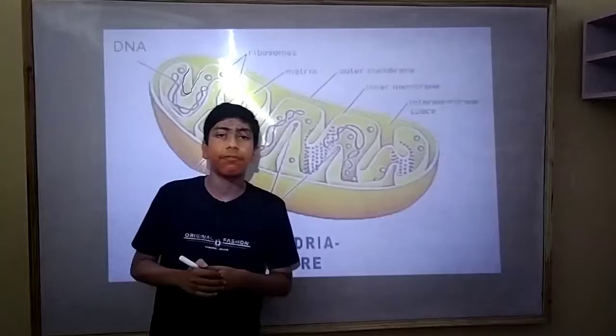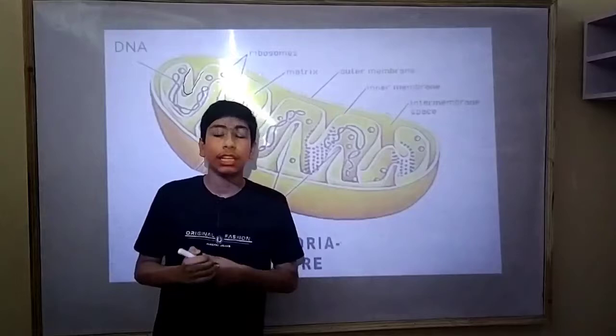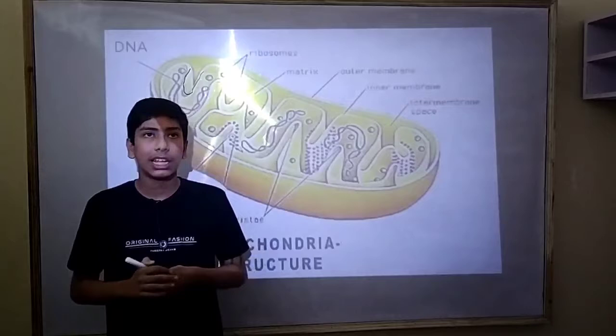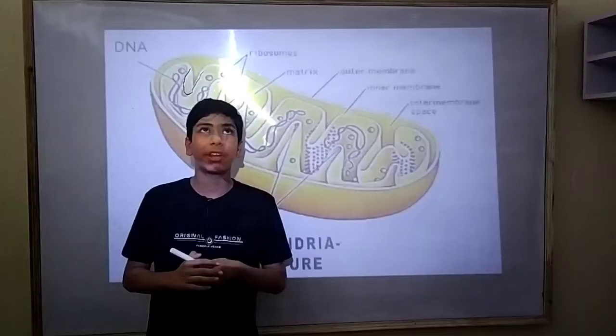Mitochondria have two membranes: inner and outer. The outer membrane covers the organelle, and the inner membrane folds many times.